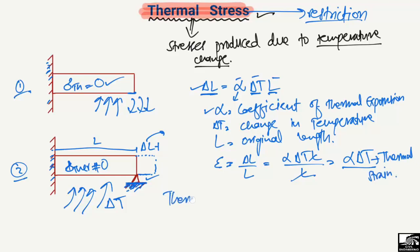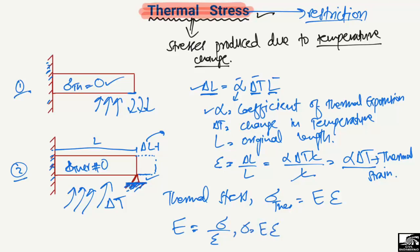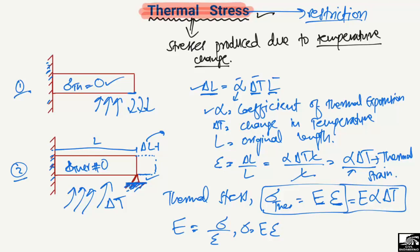Similarly, thermal stress — sigma thermal — equals E times strain. Since stress equals modulus of elasticity times strain, the thermal stress equation becomes: sigma thermal = E × alpha × delta T. This equation depends on the modulus of elasticity of the material, the coefficient of thermal expansion, and the change in temperature.